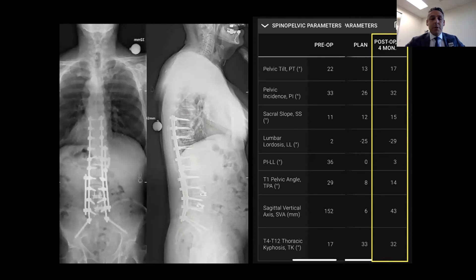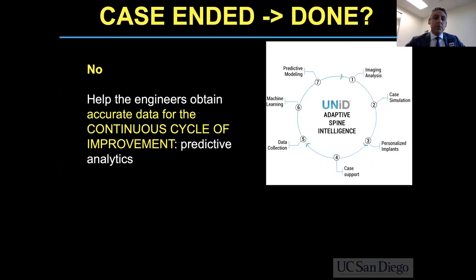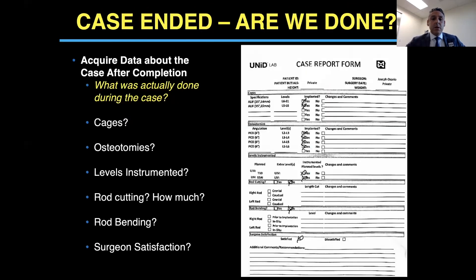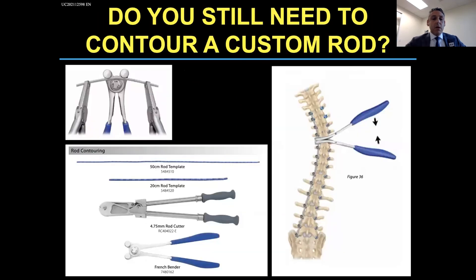At the end of the case, are we done? No — you have to feed back to the engineers what you actually did. This is the wrap-up sheet for this patient. You highlight exactly what you did in terms of cages — did you use them or not? Did you do the intended osteotomy that you had planned? Are you satisfied? Did you do any rod cutting or bending? In this case, I really did not have to modify the rod at all, though there are cases where I do.